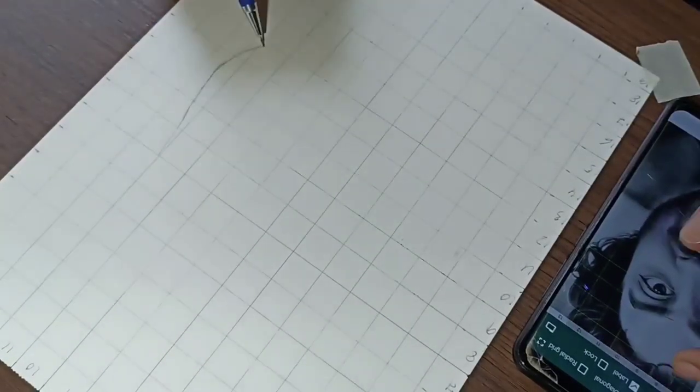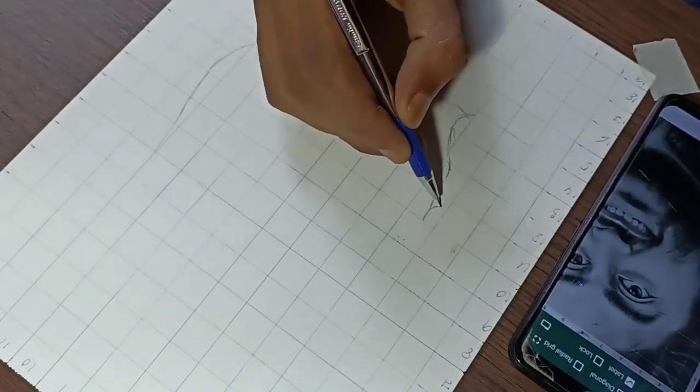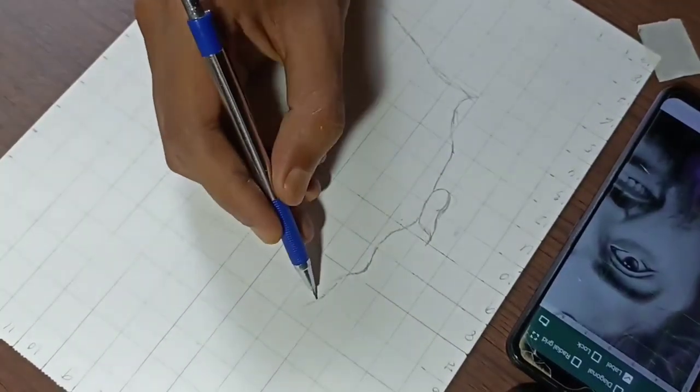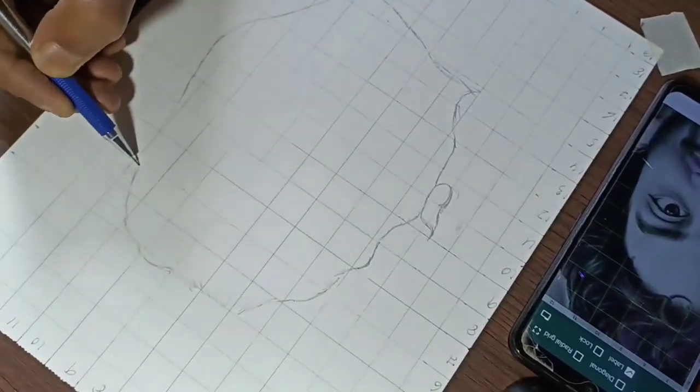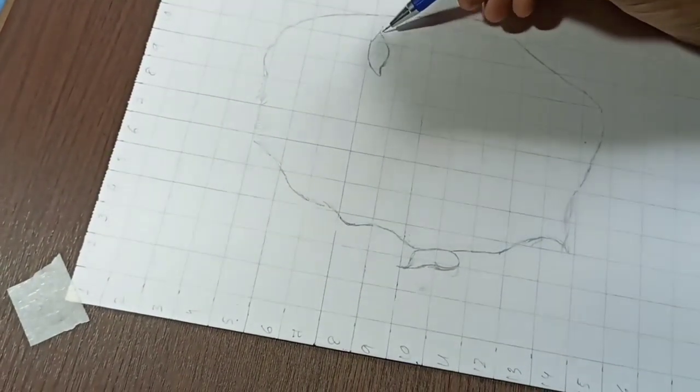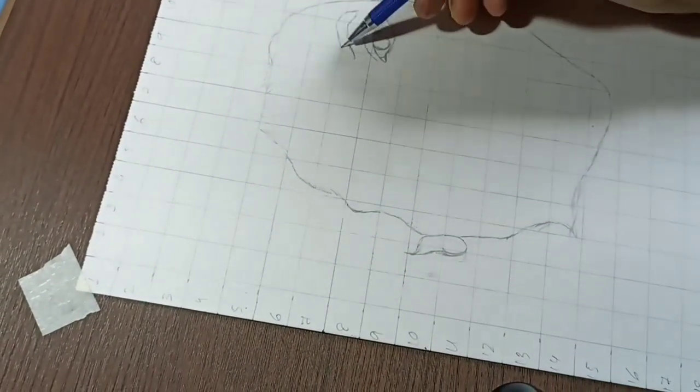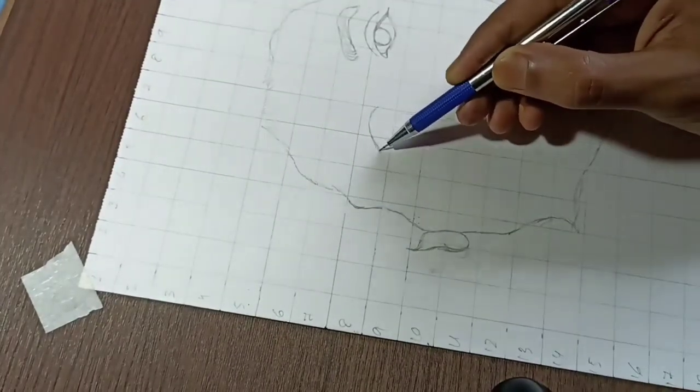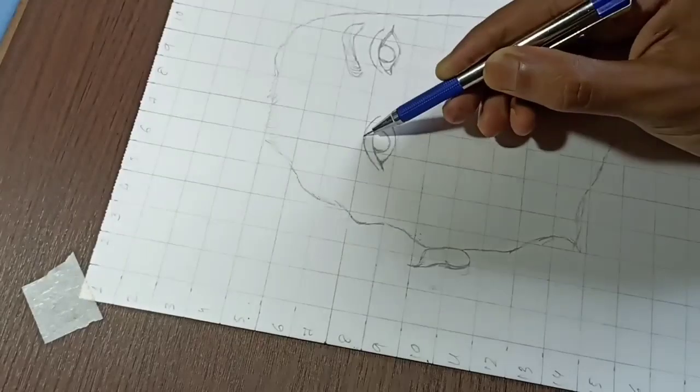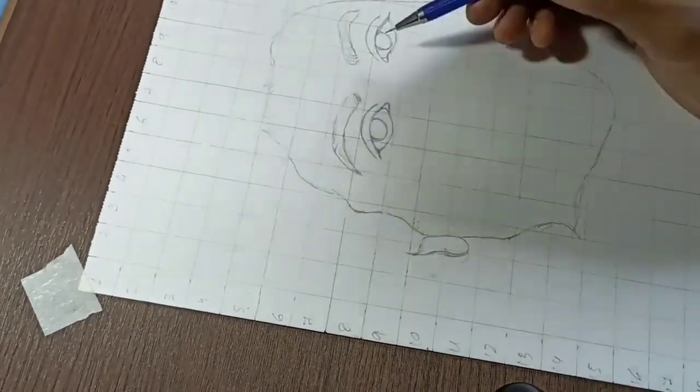So guys, here I am going to make the face structure. Now I'm going to make the eyes, nose, and lips. I will make the eyes and nose carefully. If we don't make it properly, then it will come out wrong.